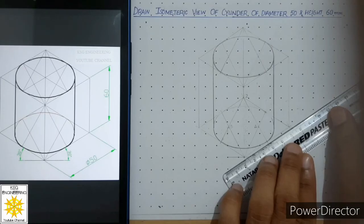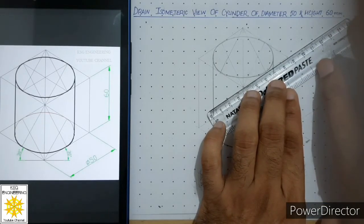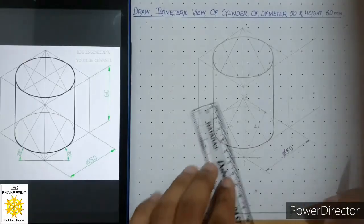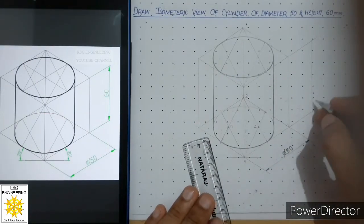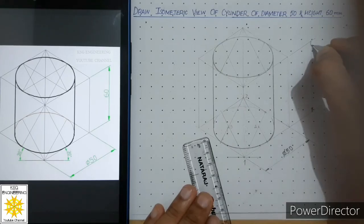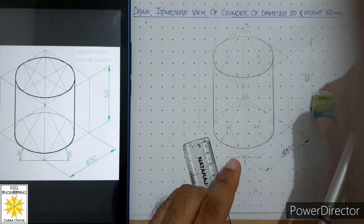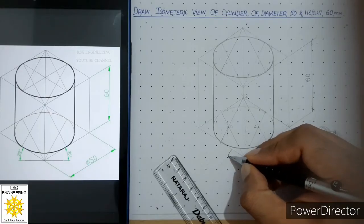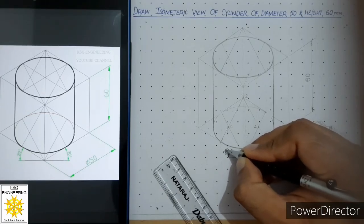Then we place the height dimension. Align your scale with this axis, leave a 1mm gap, draw a continuous thin line. Align with the other axis, leave a 1mm gap, draw another continuous thin line. Draw a vertical dimension line between these two extension lines and add closed filled arrowheads at both ends. Mention the height as 60 in gothic style, and in the aligned system indicate the 30 degree angle.